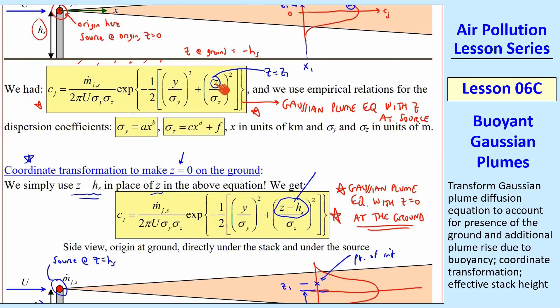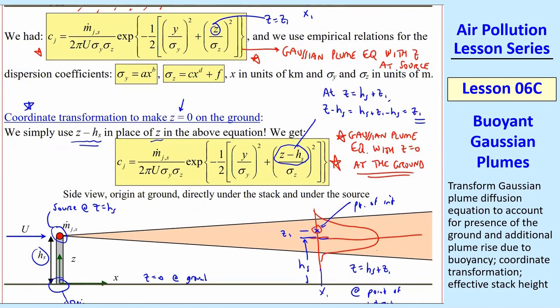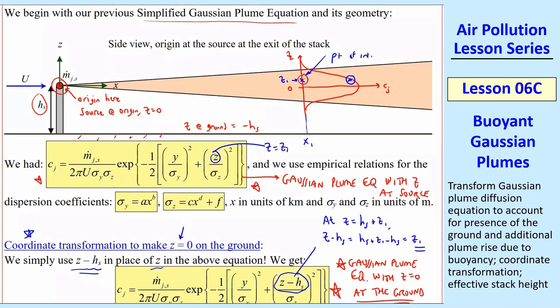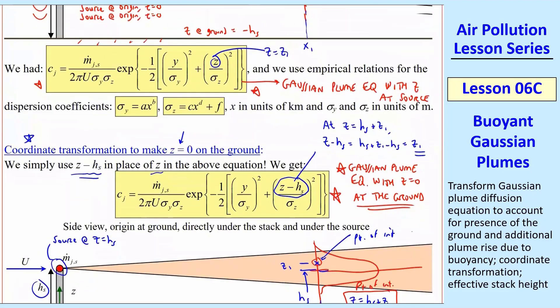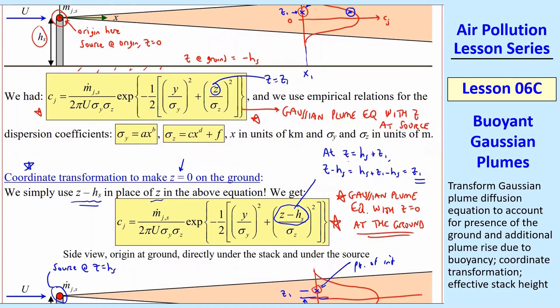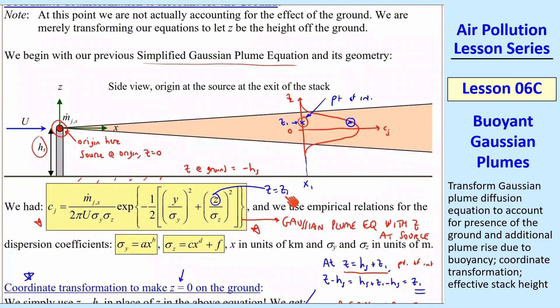The only thing we did was change from z up here to z minus hs down here. In our new transform coordinate system, this point, same point physically as we had before, this point of interest is now at z equal hs, the stack height. That gets you to the middle of the plume, plus our z1 point of interest. So that's the same physical location as we had here. But now when we plug it into here, z minus hs at that point of interest is hs plus z1 from here, minus hs from here, and that gives us z1, which is the same as we had here.